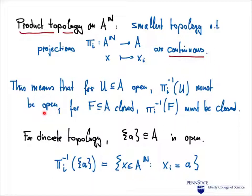What does it mean for a function to be continuous? It means that whenever we take an open subset U of A — using the topology we already have on A — the pre-image of the i-th projection, p_i^{-1}(U), must be open. Likewise, for closed sets: if F is a closed subset of A, its pre-image must also be closed.